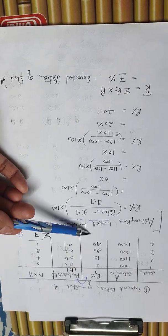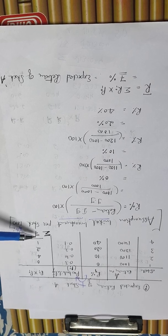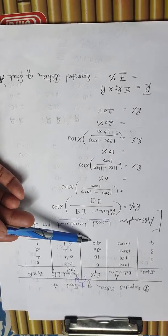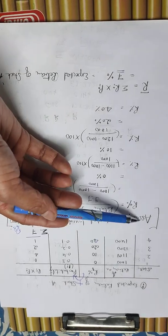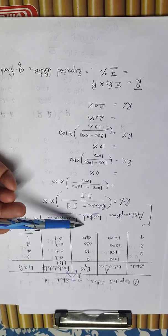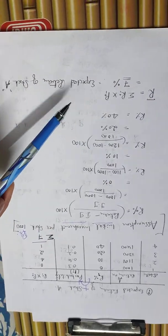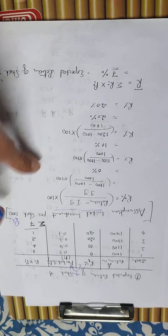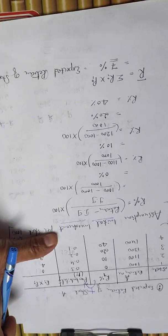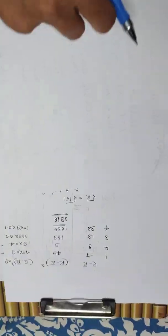The expected return of stock A is 7%. Now we move on to the standard deviation calculation.